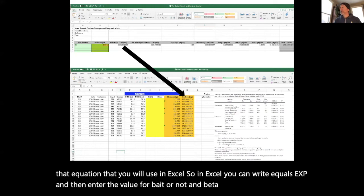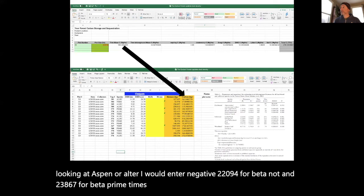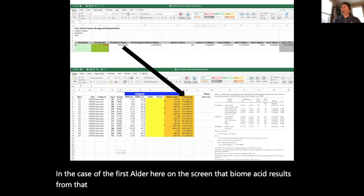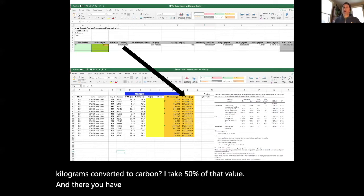For example, if I'm looking at Aspen or Alder, I would enter negative 2.2094 for beta naught and 2.3867 for beta prime times the natural logarithm of the DBH for an individual tree. In the case of the first alder here on the screen, the biomass that results from that equation, with DBH entered in centimeters, is 327.697 kilograms. Converted to carbon, I take 50% of that value. And so we've done that for all our trees.